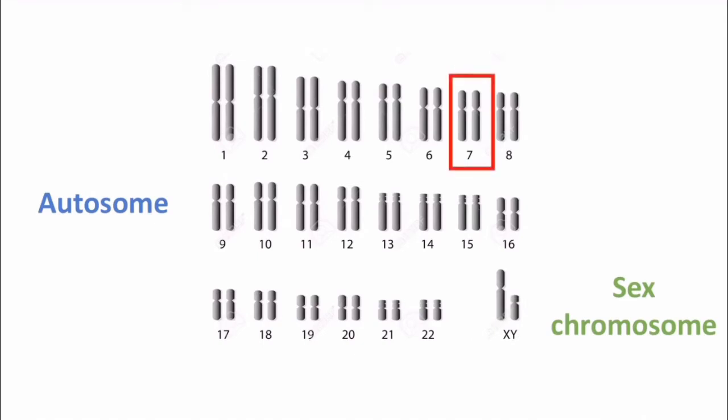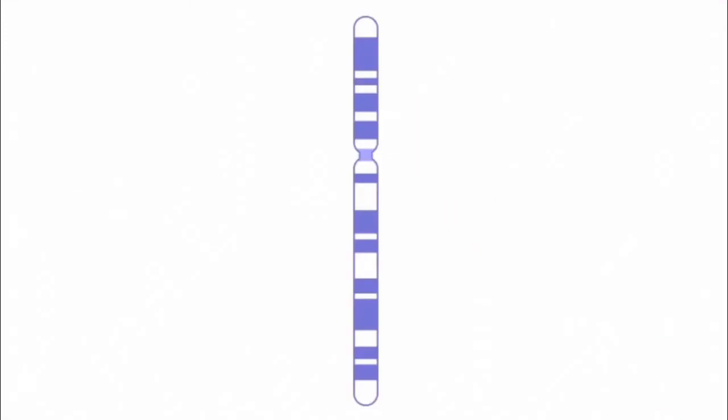For example, if we focus on chromosome 7, we can see that there are 900 to 1000 genes in this particular chromosome. We know that some genes are dominant and some are recessive by character.